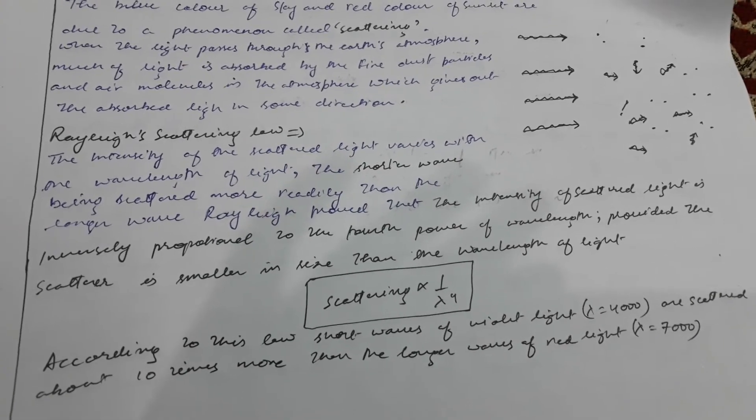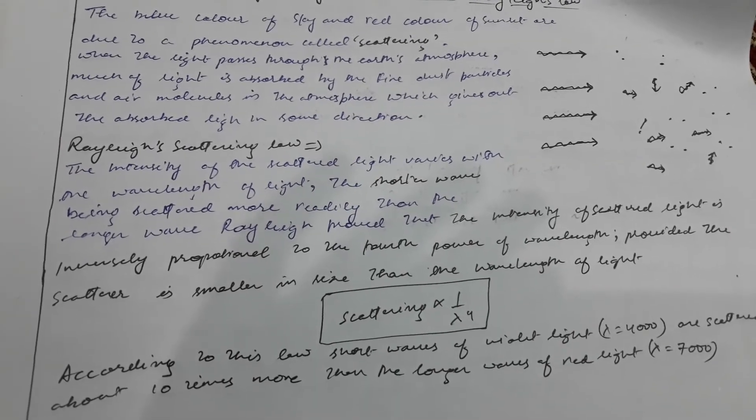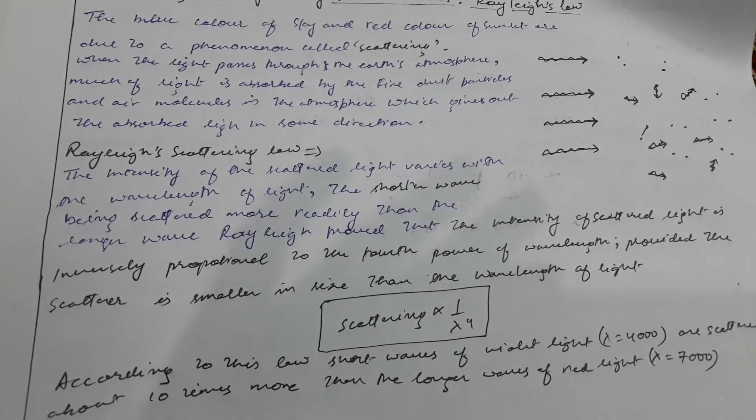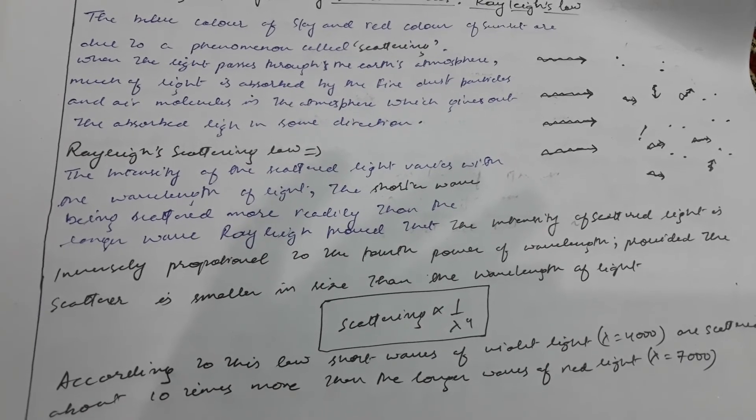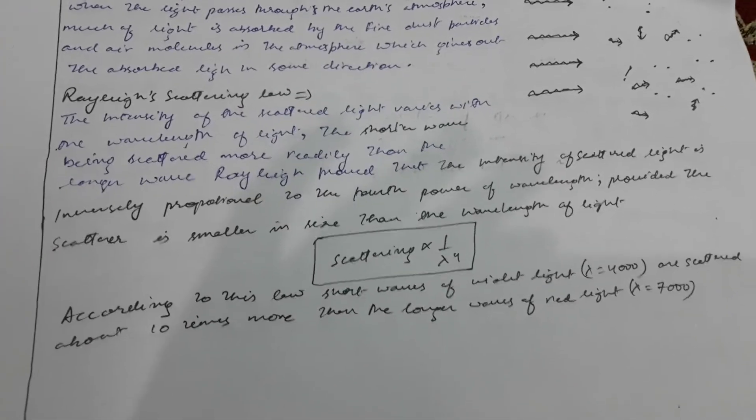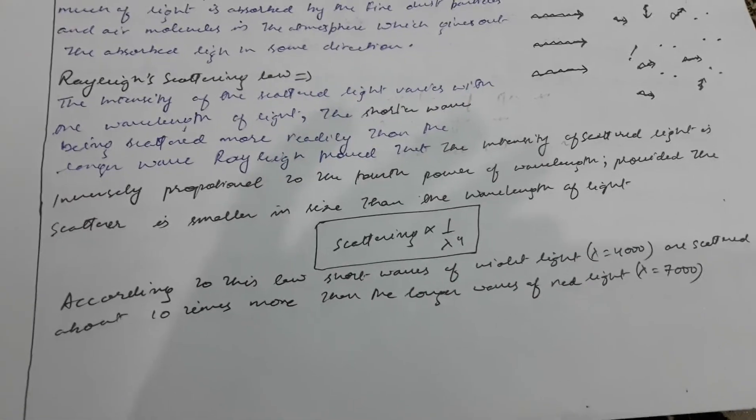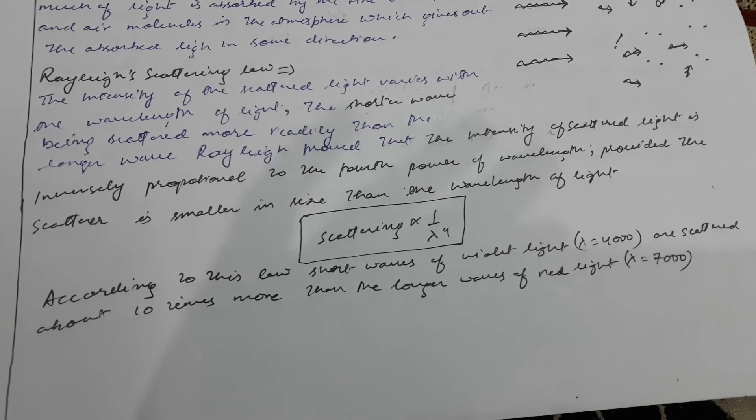Rayleigh proved that the intensity of scattered light is inversely proportional to the fourth power of wavelength, provided the scatterer is smaller than the wavelength of light. So according to this law,